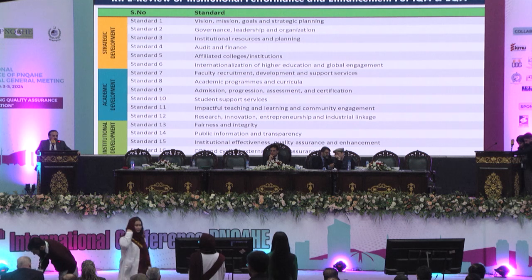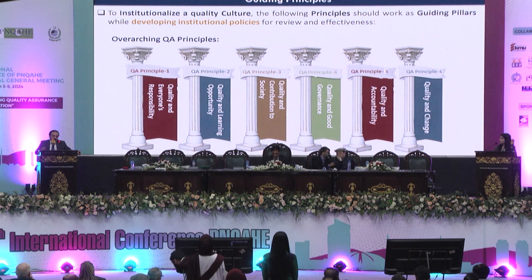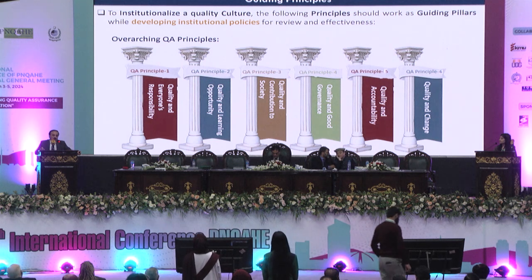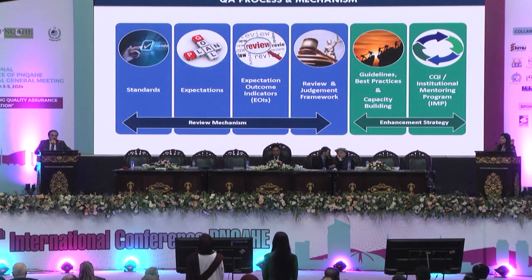The framework is built on six principles: quality is everyone's responsibility; quality and learning opportunities; quality and contribution to society; quality and good governance; quality and accountability; and quality and change. The process prescribes standards, lays down expectations, identifies expectation indicators, has a review judgment matrix for rating individual standards, and guides improvement in comparison with international best practices. It also has a cyclic quality improvement mechanism and institutional mentoring programs.